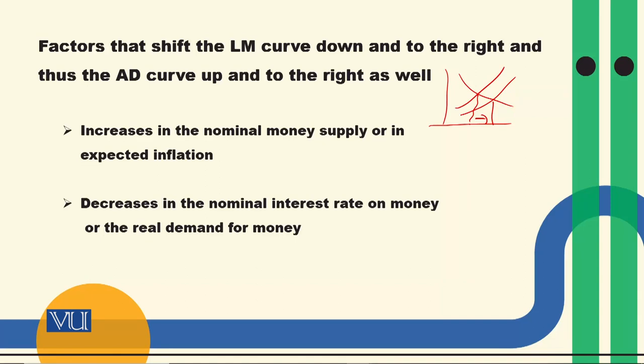آج ہم نے سمجھا کہ وہ کون سے factors ہیں جو aggregate demand curve کو shift کرنے کا سبب بنتے ہیں. Thank you very much.